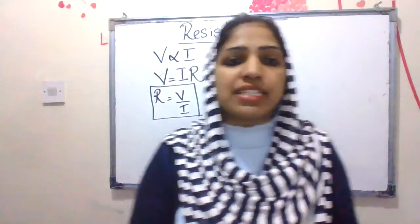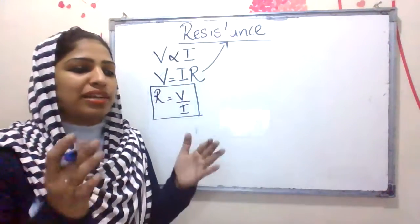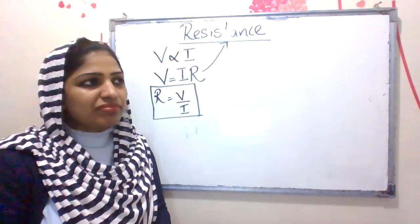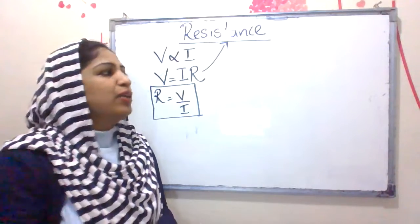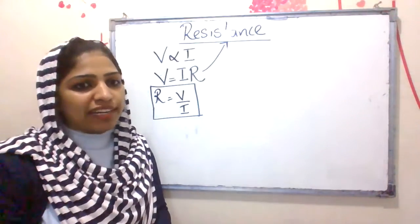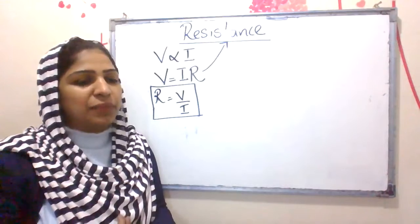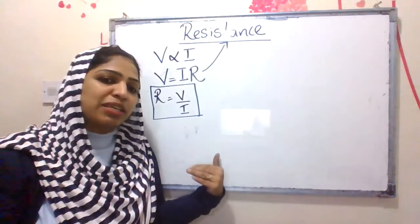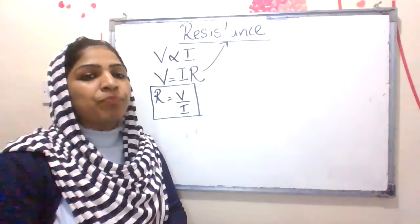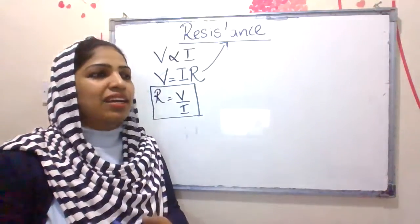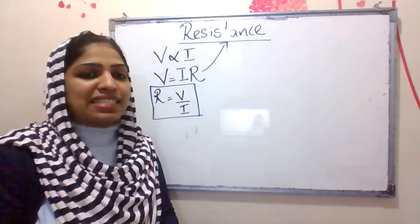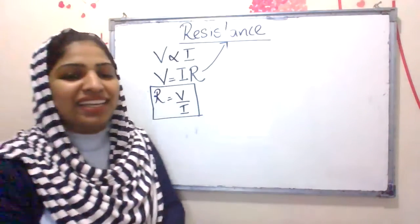What is the physical significance of resistance? What is the purpose of resistance in a circuit? It is trying to oppose the flow of current. When current flows through a metallic conductor, electrons start moving from the negative terminal to the positive terminal, getting attracted towards the positive terminal. Current flows in the opposite direction, and electrons resist that movement. This is what resistance does in a circuit.